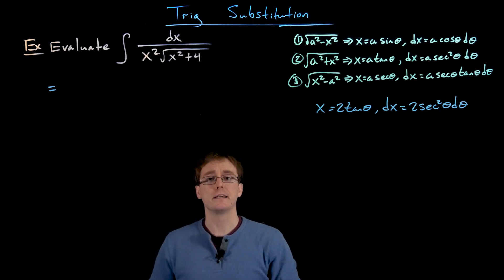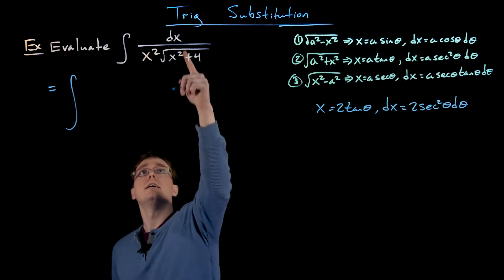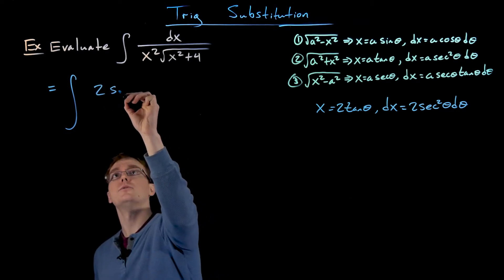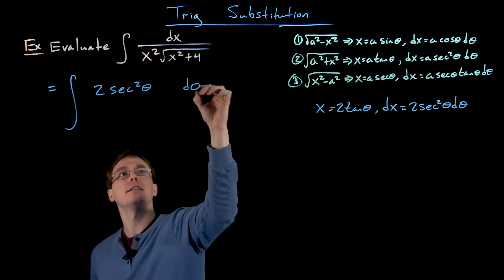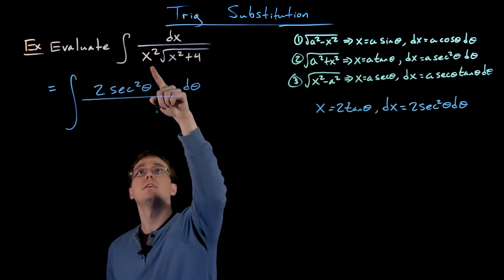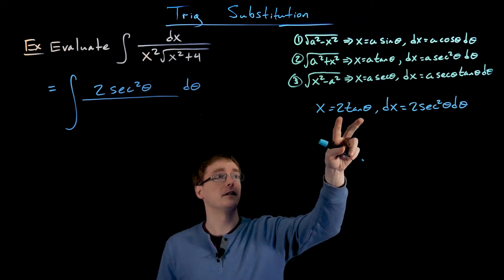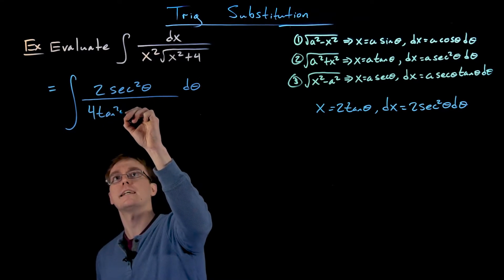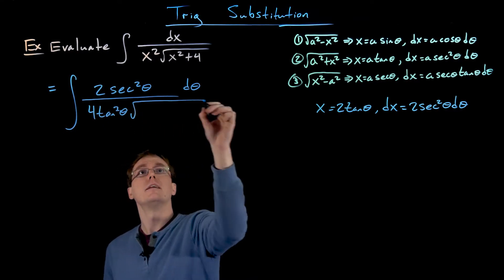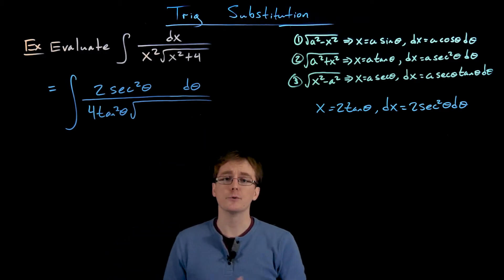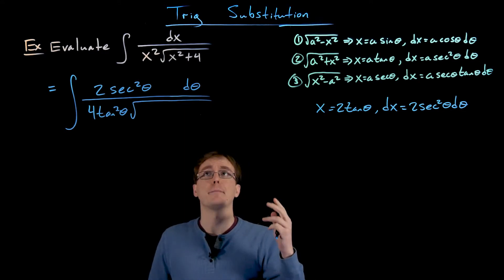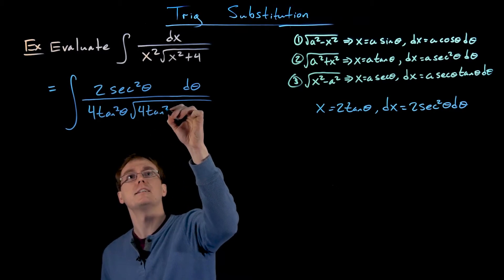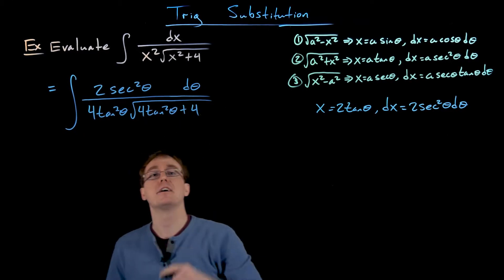Let's start implementing our substitutions. In the numerator we swap out dx for 2 secant squared of theta d theta. In the denominator, x squared becomes the quantity 2 times tangent, all squared — that's 4 times tangent squared of theta. Under the square root, x squared turns into 4 times tangent squared of theta, and we still add 4 to that.